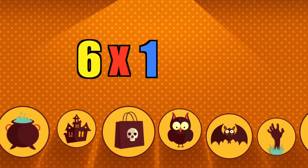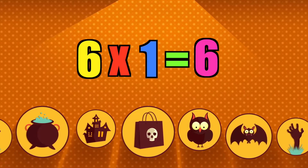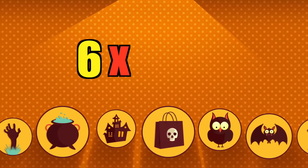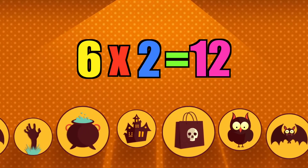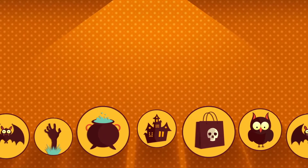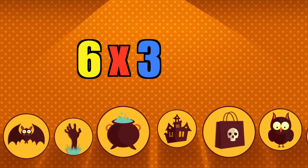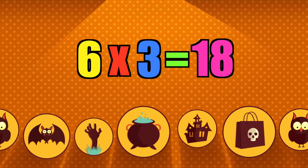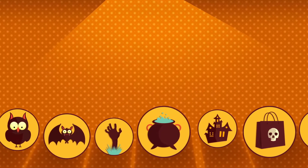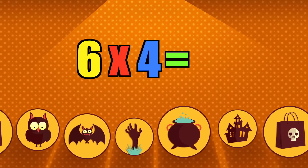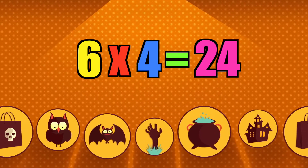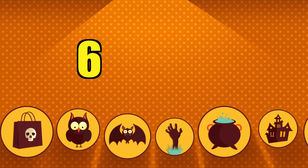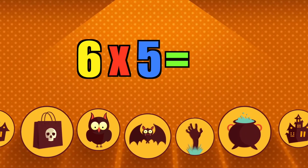Six times one is six. Six times two is twelve. Six times three is eighteen. Six times four is twenty-four. Six times five is thirty.